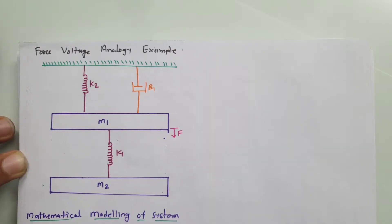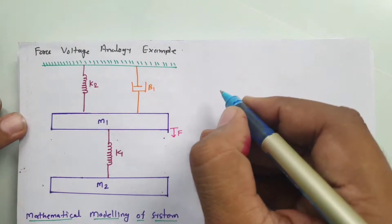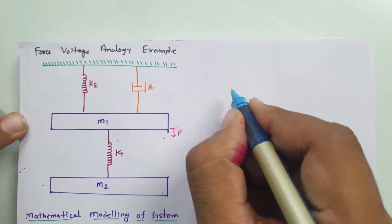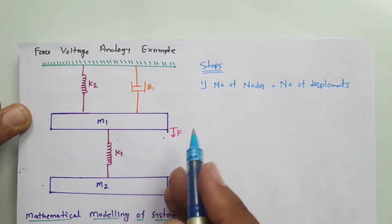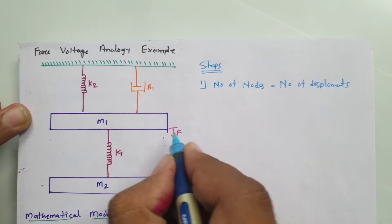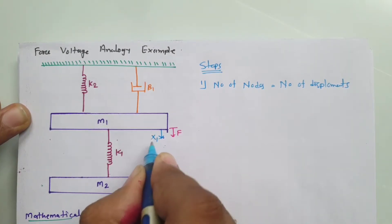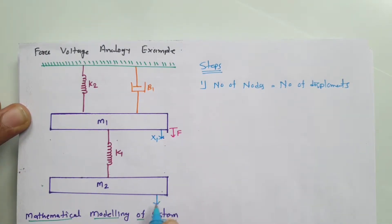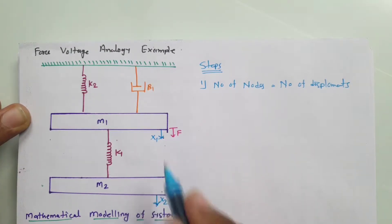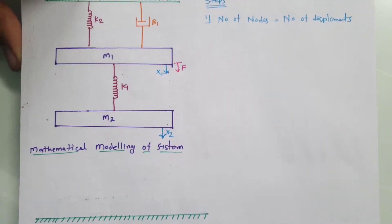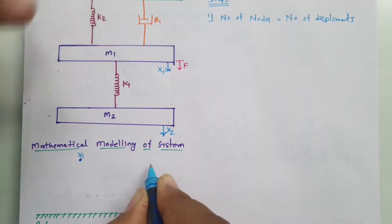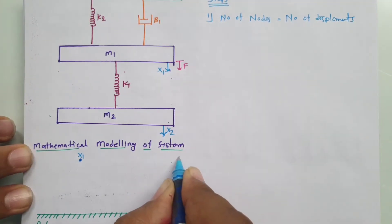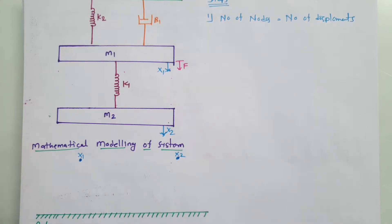There are a few basic steps which we need to follow. The first step is to identify the number of displacements, which equals the number of nodes. With this system, force f is given, so there will be displacement x1 with the first mass and displacement x2 with the second mass. As there are two displacements, there will be two nodes: node x1 and node x2.